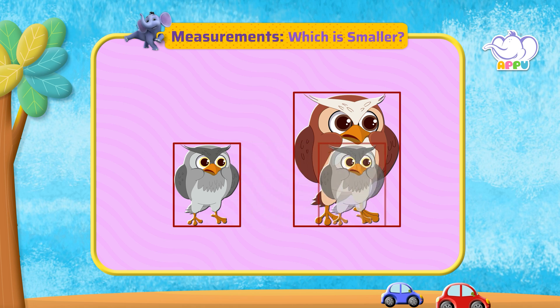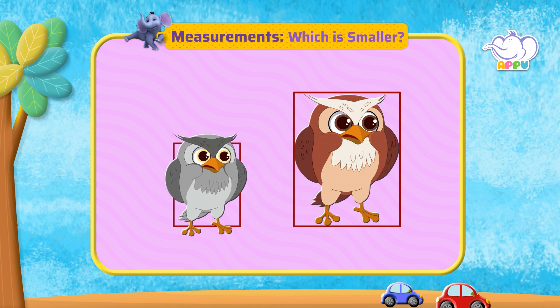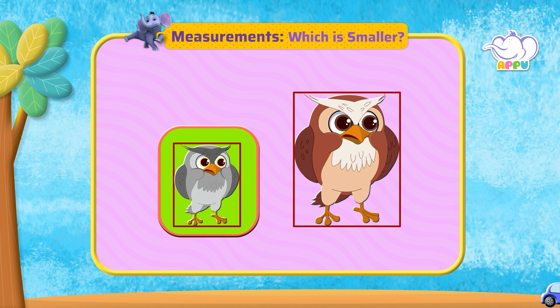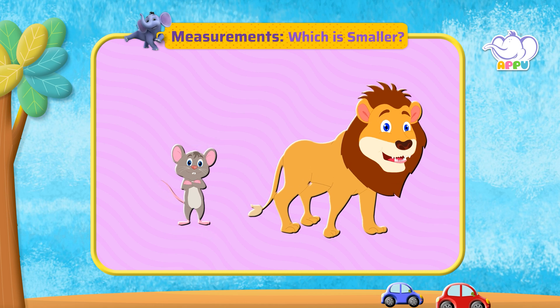We can see that this box is smaller, so the gray owl is smaller than the brown owl. Which is smaller: the mouse or the lion?